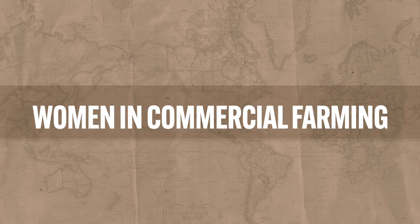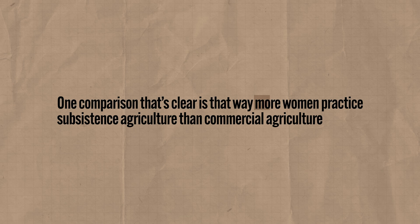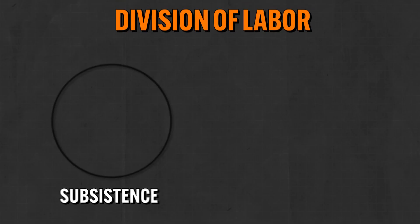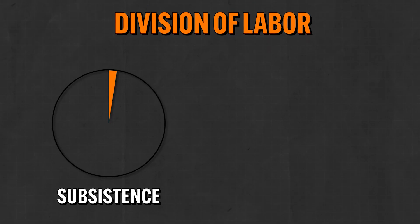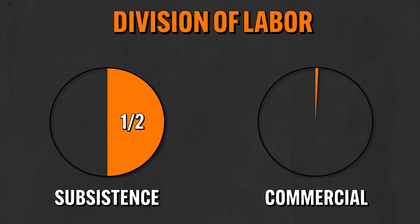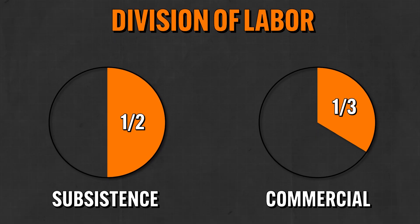Now let's briefly consider the role of women in places where commercial agriculture is the norm — that is to say core countries. There's still a decent amount of variation in women's roles between various commercial economies, but the variation is not nearly as pronounced as in subsistence economies. One clear comparison is that far more women practice subsistence agriculture than commercial agriculture. In subsistence economies, roughly half of agricultural labor is made up of women, but in commercial economies, women only hold about a third of agricultural jobs, many of whom hold executive or managerial positions.